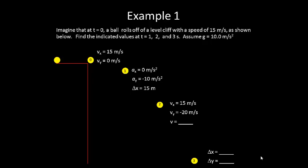Now let's consider at t equals 2 seconds, our velocity in the x direction is still 15 meters per second. Our velocity in the y direction is going to be negative 20 meters per second since we are accelerating at a rate of negative 10 meters per second squared. We have negative 10 meters per second every second that passes. Our initial velocity was 0 and our time is 2 seconds.